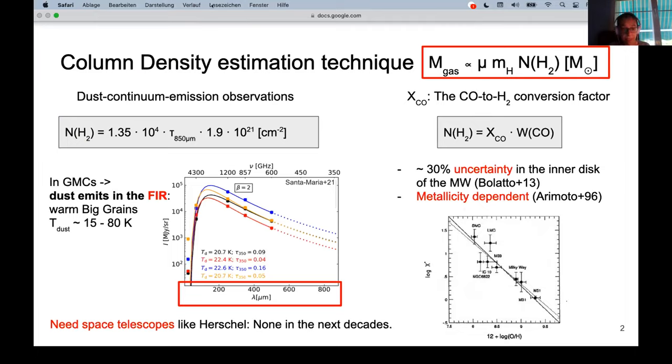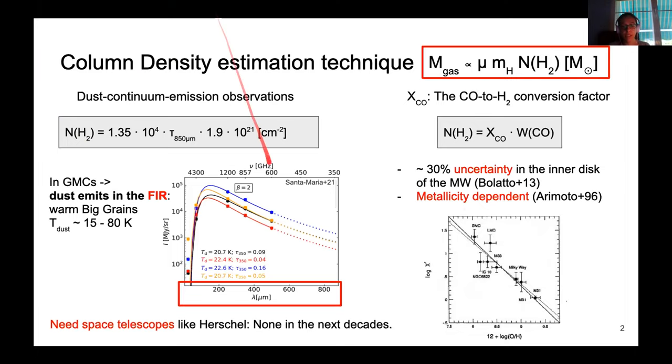This is between 70 microns and more than 500 microns. For this we need space telescopes and there's none of them planned for the next decades. If we don't have telescopes to do this, we move to another option that is to use the CO intensity using the CO-to-H2 conversion factor.